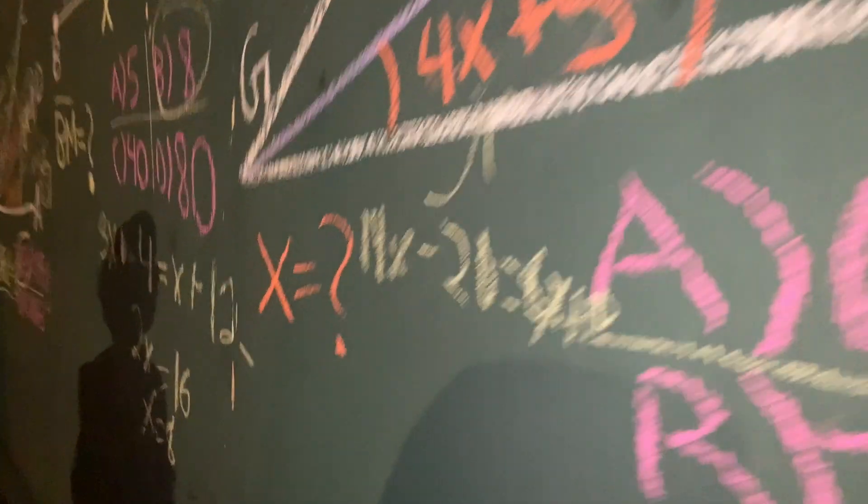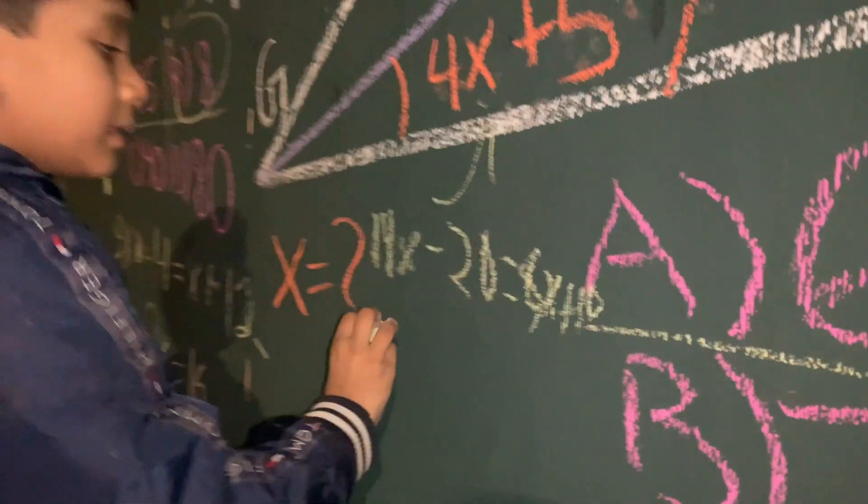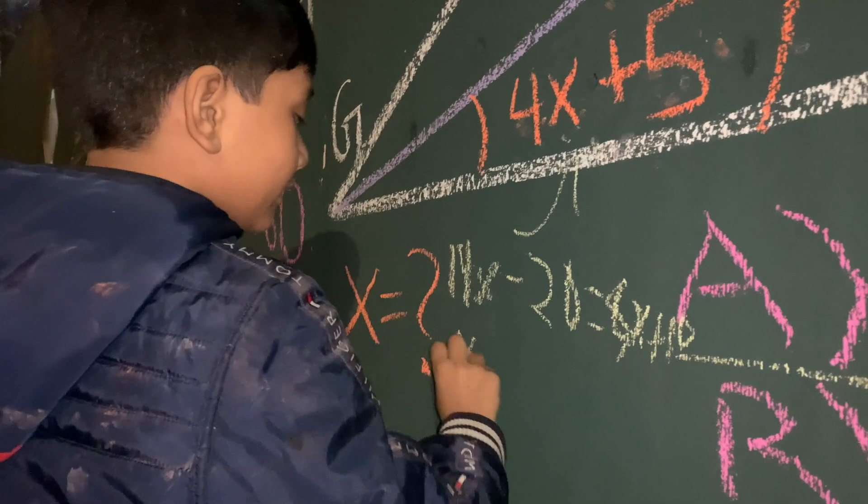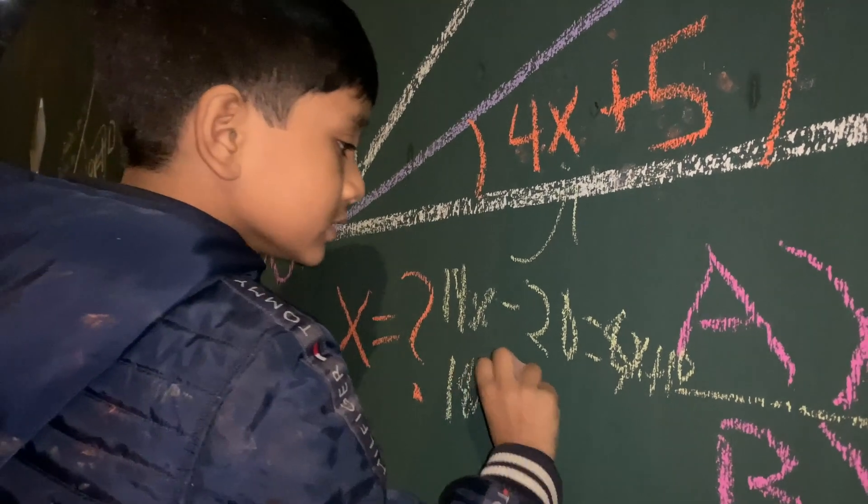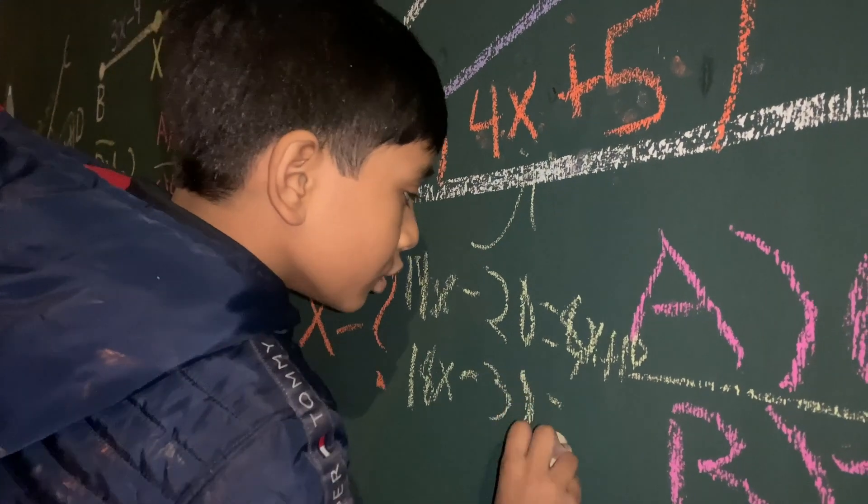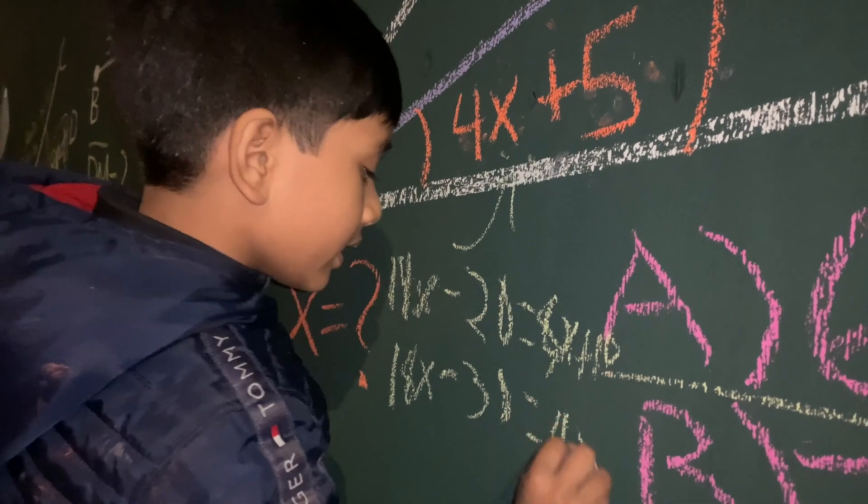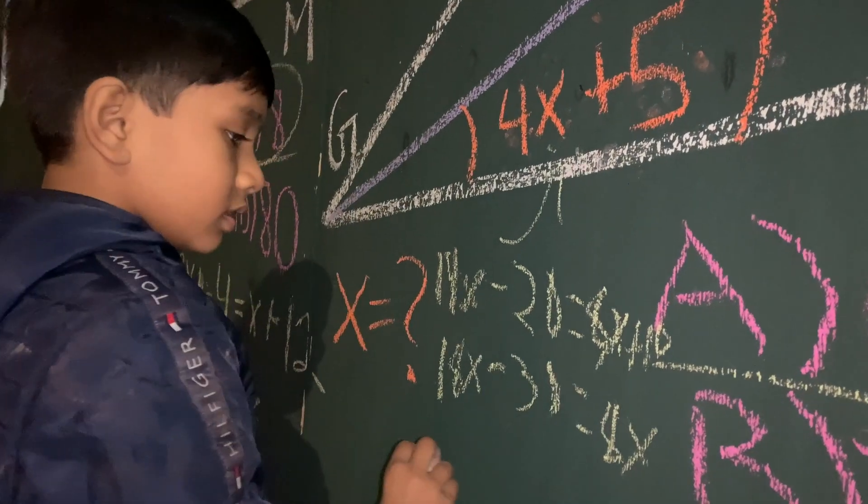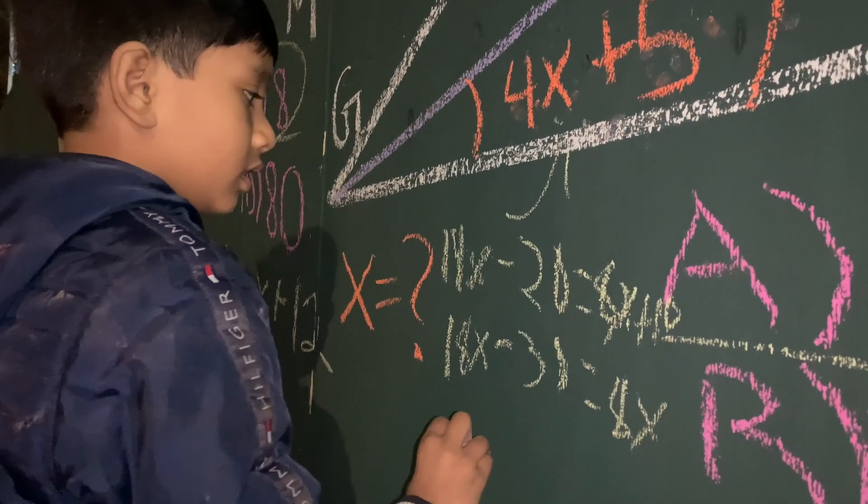Now let's rearrange this. If you subtract both sides by 10, that gives you 18x minus 30 is equal to 8x and then nothing. Oh yeah, 14x.